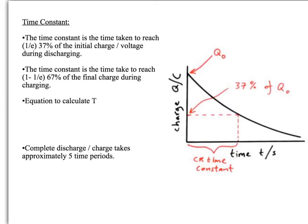The last thing you need to know is something called a time constant. The time constant during discharging is the time it takes to get to 37% of its initial charge, so to 37% of Q0 or V0. During charging, it's the time taken to reach 67% during charging. You'll find that when you work out the time constant during charging and discharging, you should get the same answer.